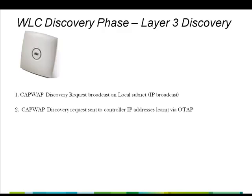Next, when a feature called over-the-air provisioning is enabled on a controller, access points that are already joined to the controller advertise their known controller IP addresses in neighbor messages that are sent over the air. New access points attempting to discover controllers receive these messages and then unicast a discovery request to each controller. Controllers receiving the discovery request unicast a discovery response to the access point.